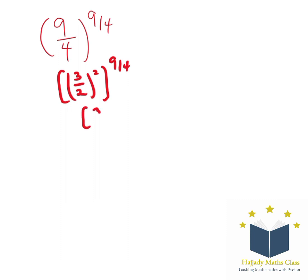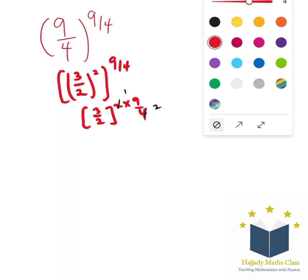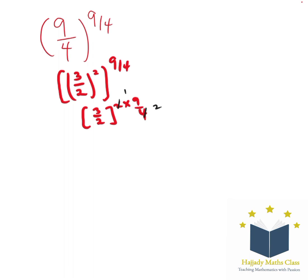So this is the same thing as 3 over 2 multiplied by 9 over 4, and with this we can simplify — 2 here and 2 here — so here we have 3 over 2 to the power of 9 over 2.